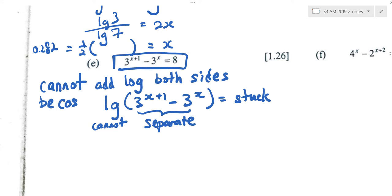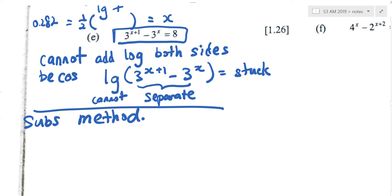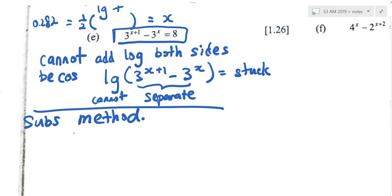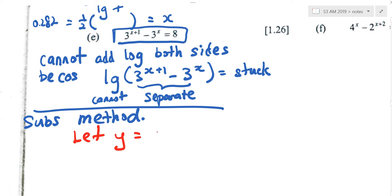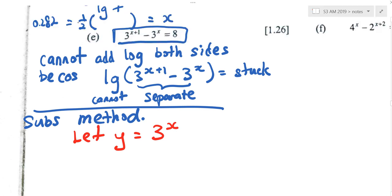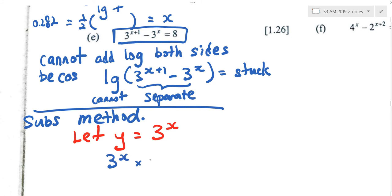You're stuck, so how do I do it? I'll use substitution. Can you write down substitution method? Now, this is not equation one, equation two, and solve simultaneous. You have to create something called let y be equals to 3 power x. So what happens? 3 power x plus 1 is 3 power x times 3 power 1, minus 3 power x equals to 8.